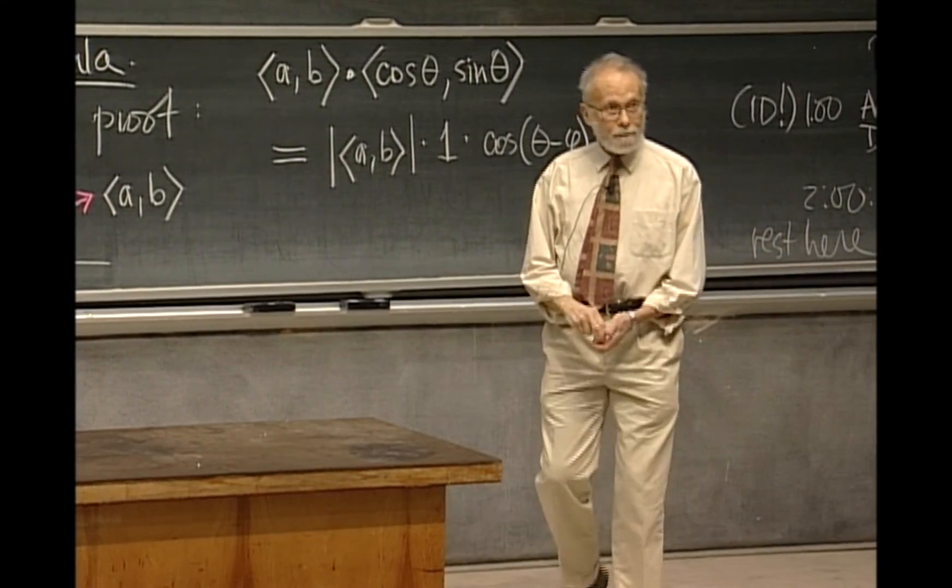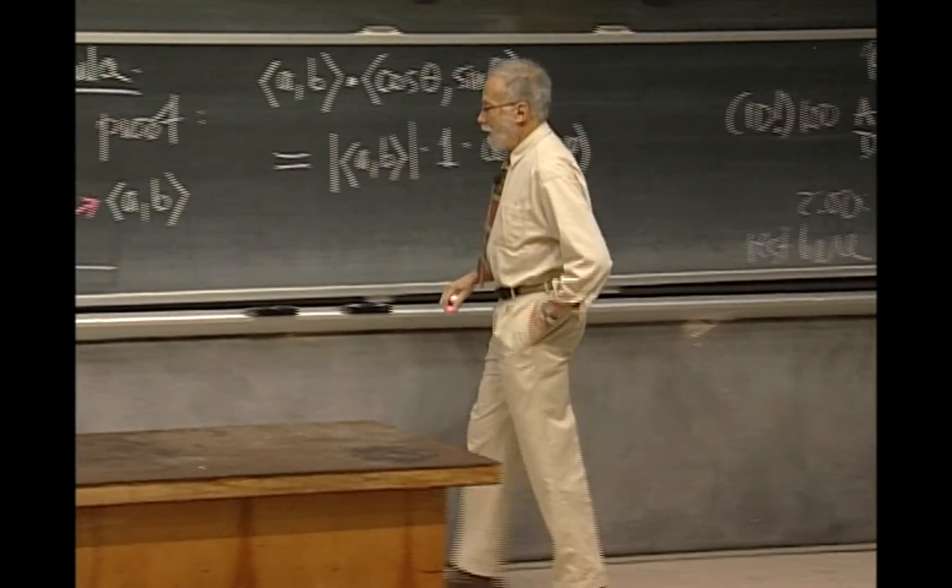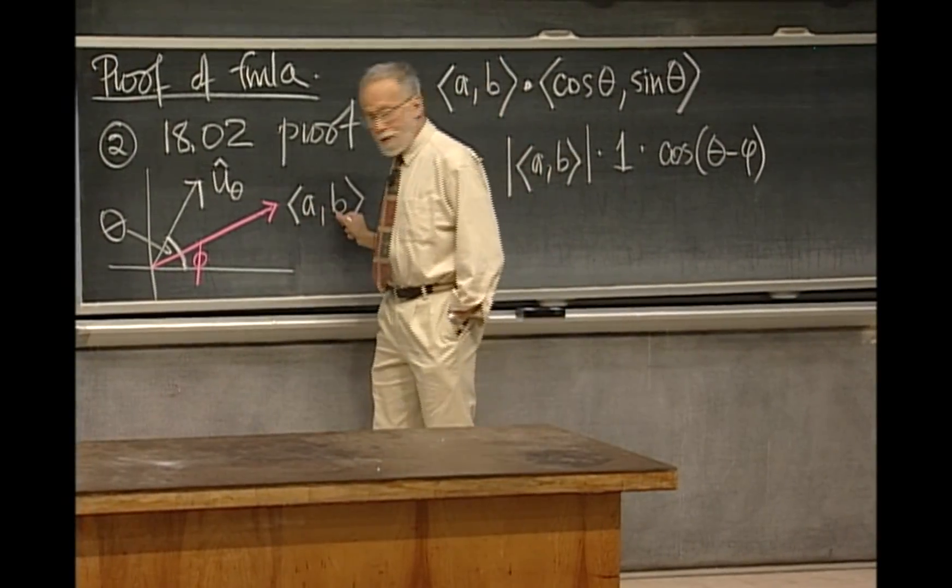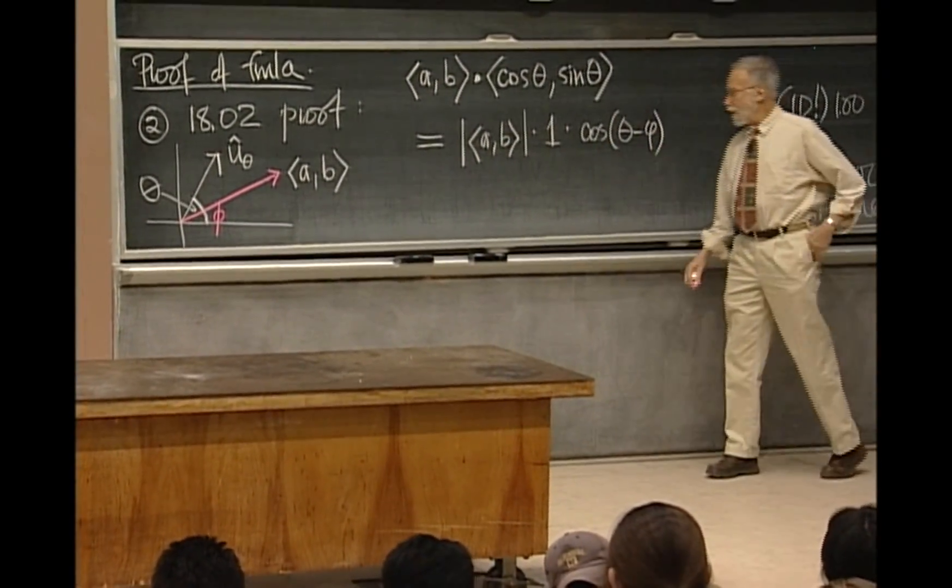That's the formula. It comes from two ways of calculating the scalar product of the vector whose coefficients are a and b, and the unit vector whose components are cosine θ and sine θ.